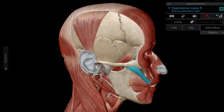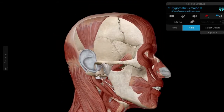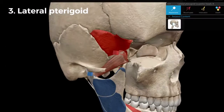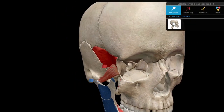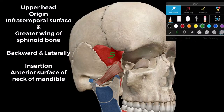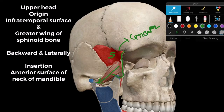Now let's move to the pterygoid muscles. The lateral pterygoid has two parts: upper head and lower head. The upper head originates from the greater wing of the sphenoid bone. It is directed backward and laterally, and is inserted onto the anterior surface of the neck of the mandible, which is part of the condylar process.